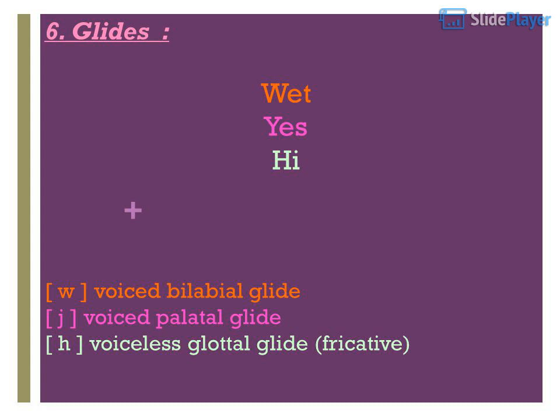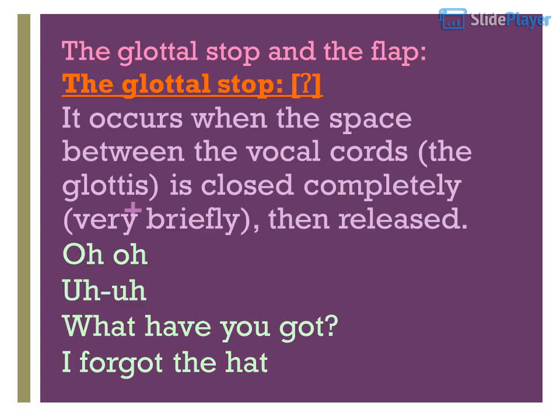H — voiceless glottal glide fricative. The glottal stop and the flap: it occurs when the space between the vocal cords, the glottis, is closed completely, very briefly, then released. Examples: oh-oh, uh-uh, 'What have you got?', 'I forgot that.'